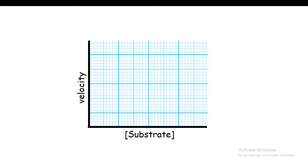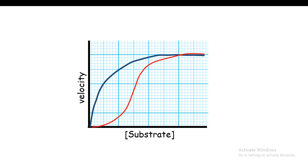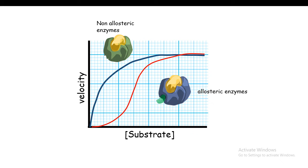Let's look at the kinetic data of allosteric enzymes and compare it with Michaelis-Menten enzymes. Michaelis-Menten enzymes show a hyperbolic curve. In comparison, allosteric enzymes do not follow Michaelis-Menten kinetics — rather, they show a sigmoidal curve. This sigmoidal curve is a hallmark for cooperativity. We would understand what cooperativity means shortly.